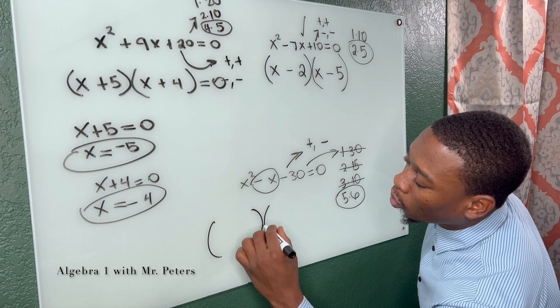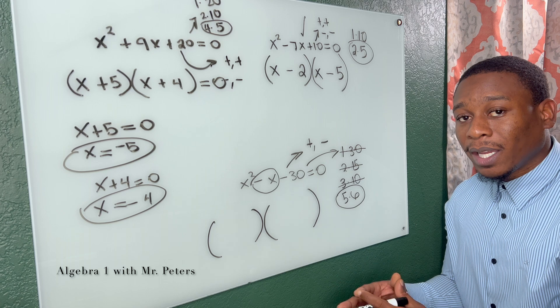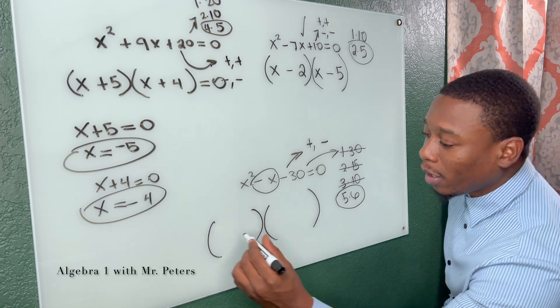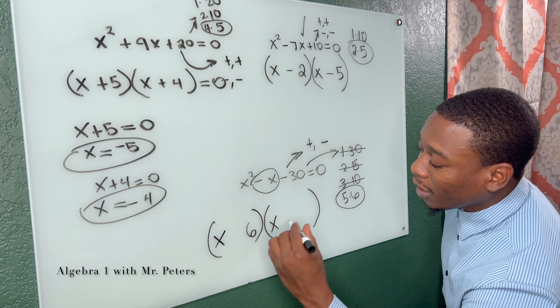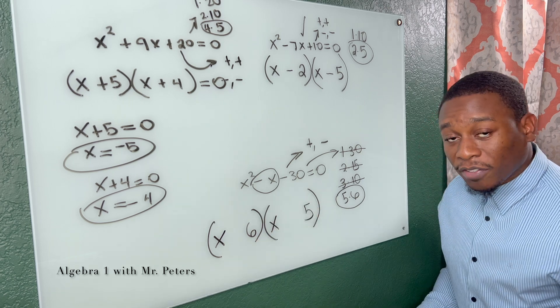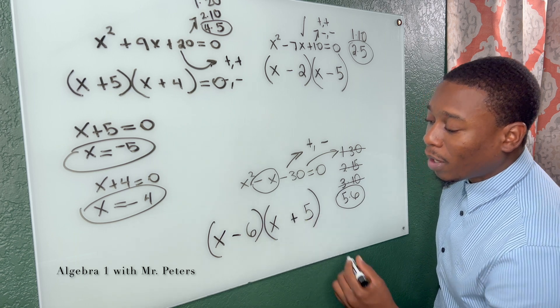Now for us to get this correct, when we multiply, we get negative 30. But when we add or combine them, we get a negative one. So for me to get a negative one, that means the larger number, six, is going to have to be negative, and then my five is going to be positive.